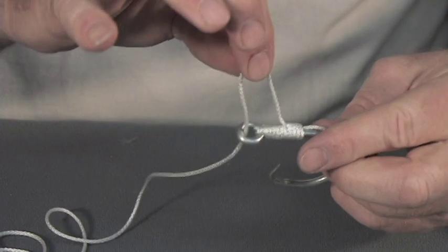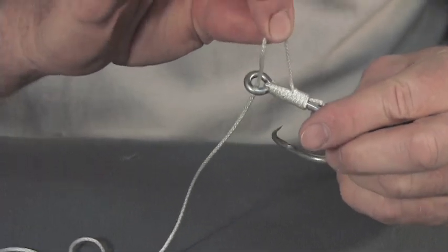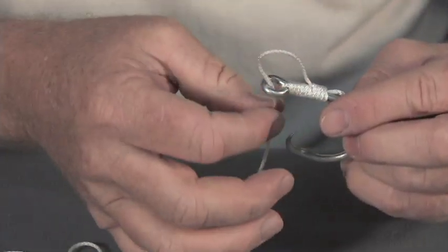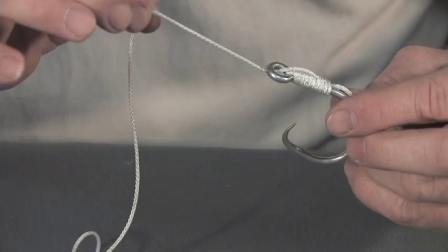This is where you have your egg loop—that's where you attach your eggs. Put a gob of eggs in there, pull it down, and it will hold the eggs on your hook.